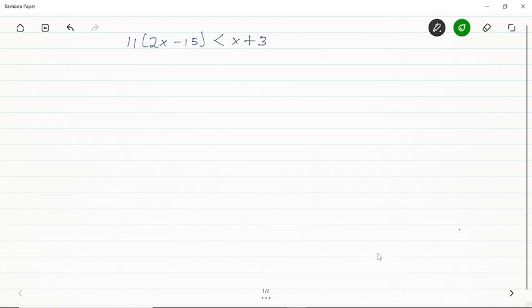Hello and welcome to Subwatch TV. Today we have a beautiful question I wanted to look at. We have 11(2x - 15) < x + 3. The idea is to find x, write the solution in set notation, and represent our answer on a number line. Now let's get straight into it.